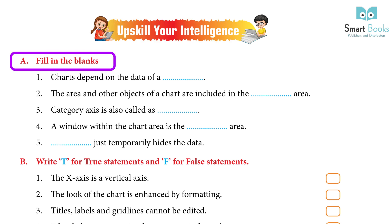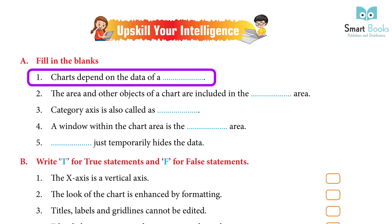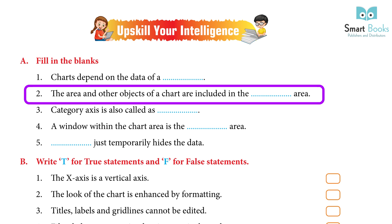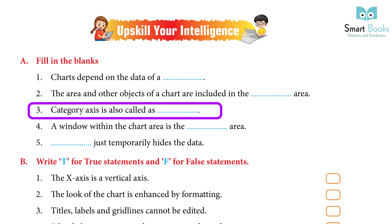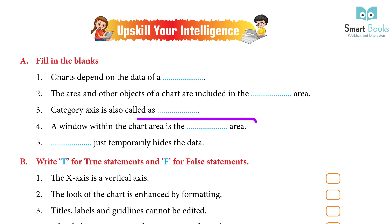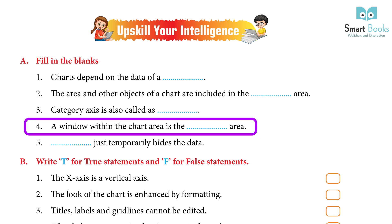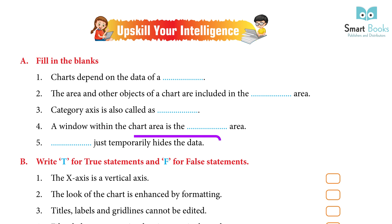Upskill Your Intelligence. A. Fill in the blanks: 1. Charts depend on the data of a — Answer: Worksheet. 2. The area and other objects of a chart are included in the — area. Answer: Chart. 3. Category axis is also called — Answer: X-axis. 4. A window within the chart area is the — area. Answer: Plot. 5. — temporarily hides the data. Answer: Filter.